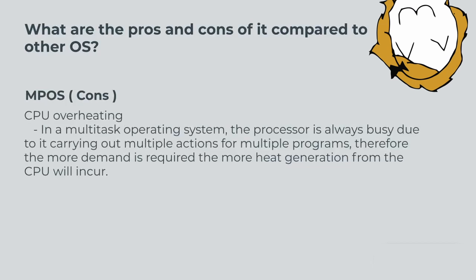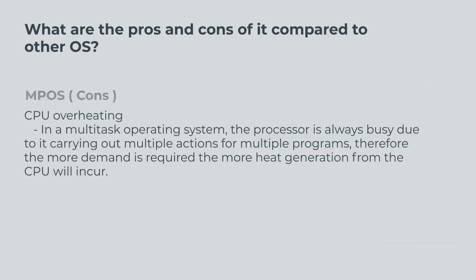Multiprocessing OS cons: CPU overheating. In a multitask operating system, the processor is always busy due to carrying out multiple actions for multiple programs. Therefore, the more demand is required, the more heat generation from the CPU will incur.